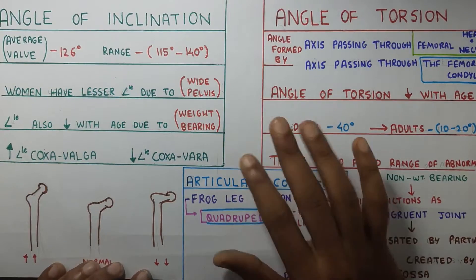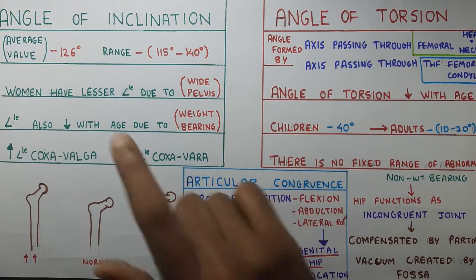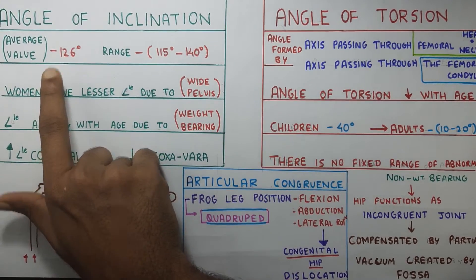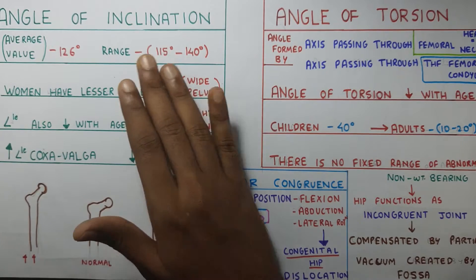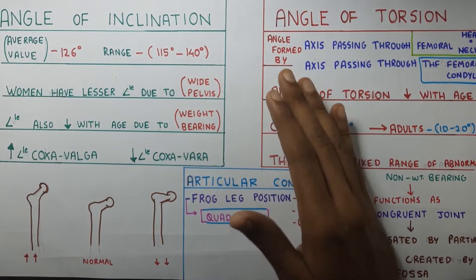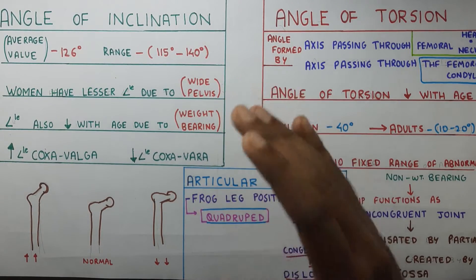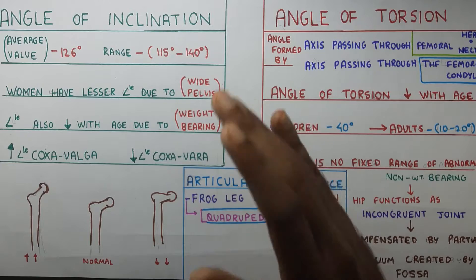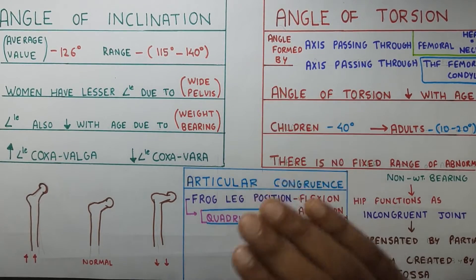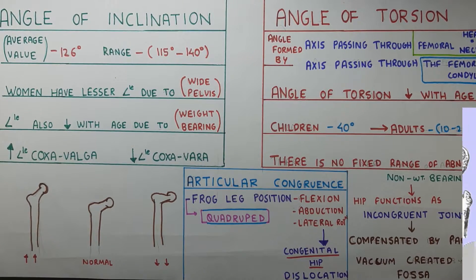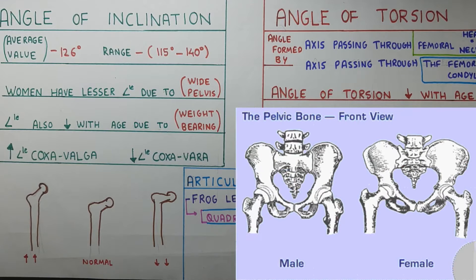Starting with angle of inclination: the average value is around 126 degrees and it can range from around 115 to 140 degrees. These values are very important for your MCQ. Women have a lesser angle due to their wider pelvis, so the angle of inclination will always be lesser for women.